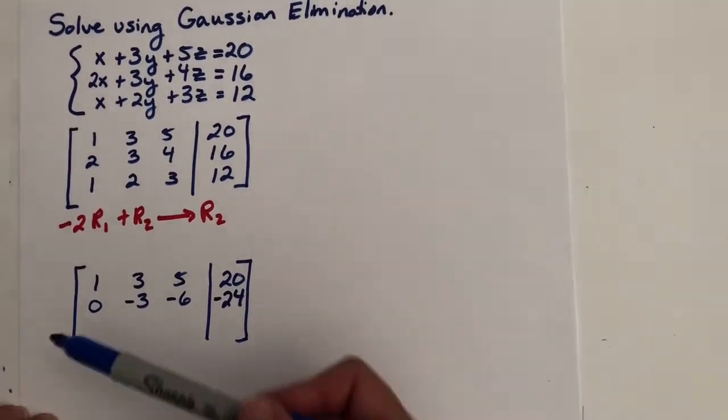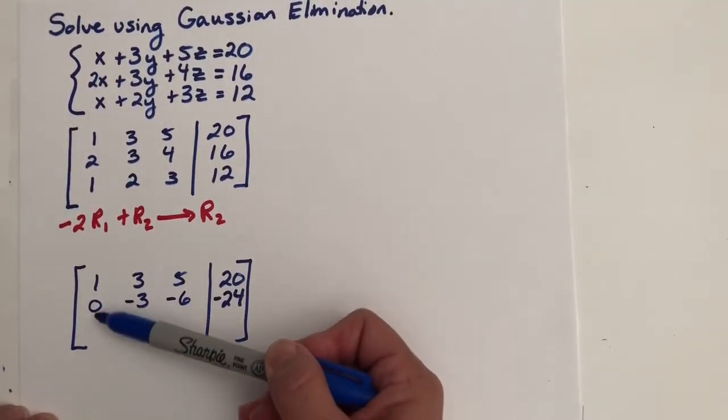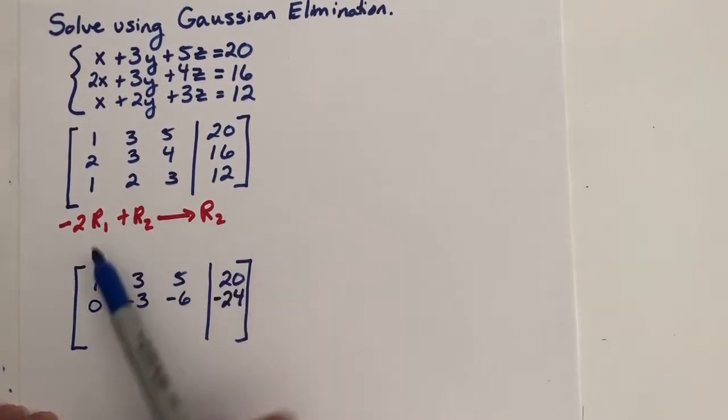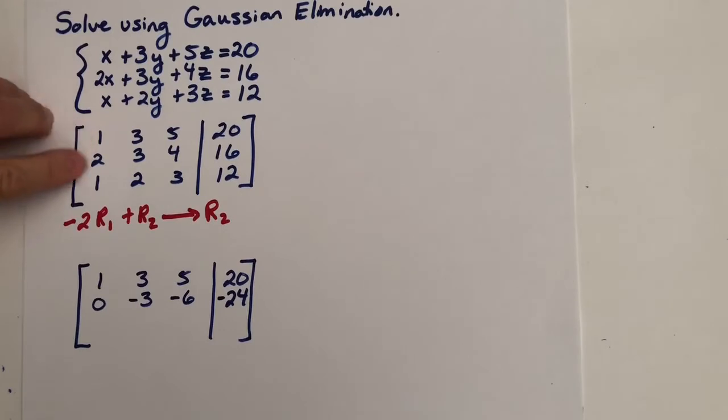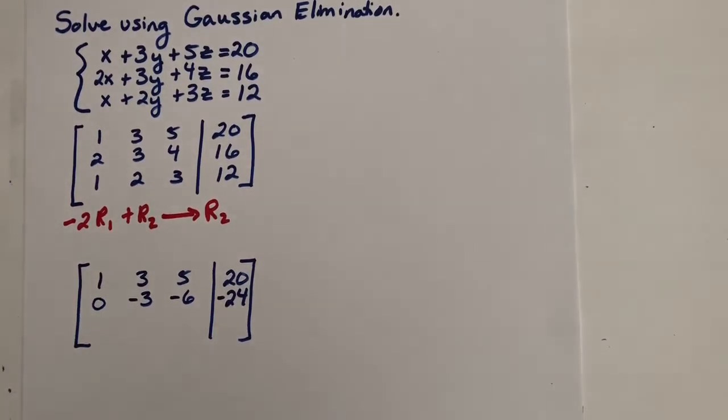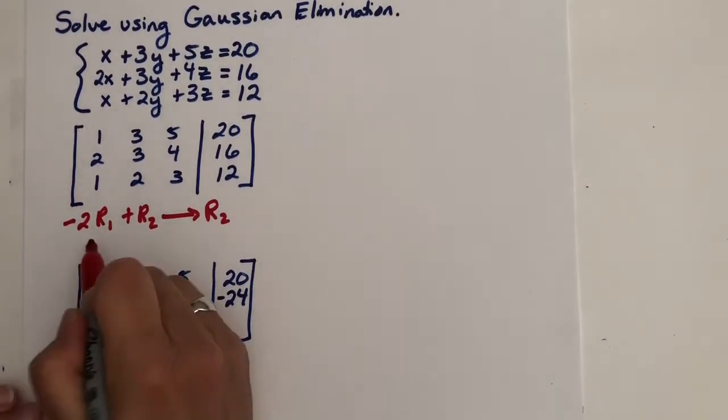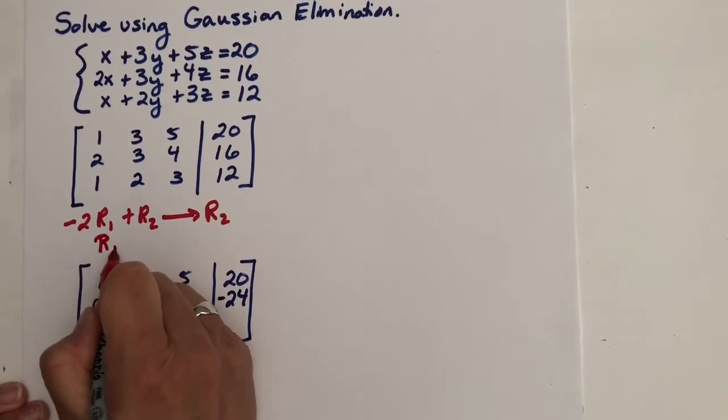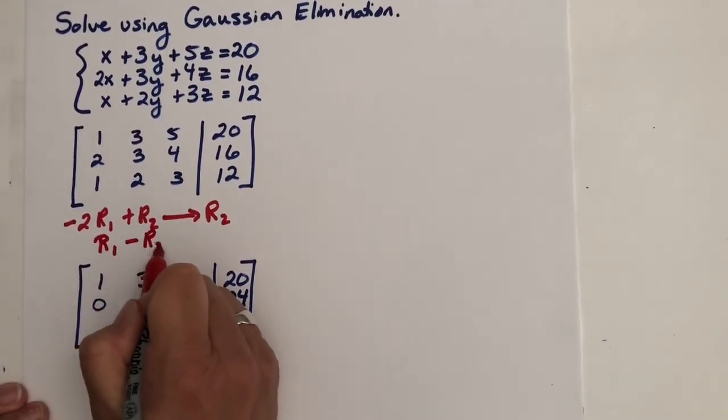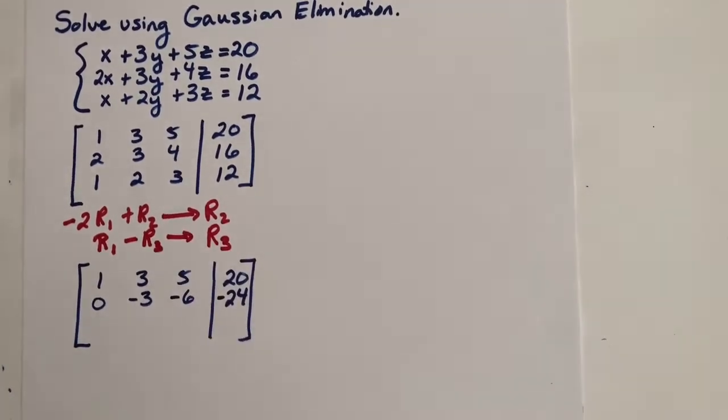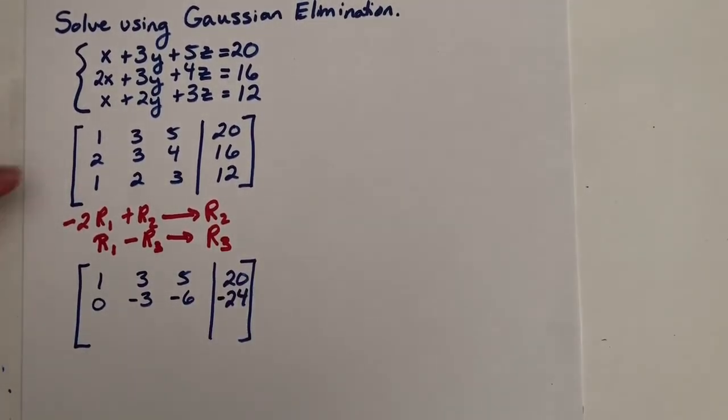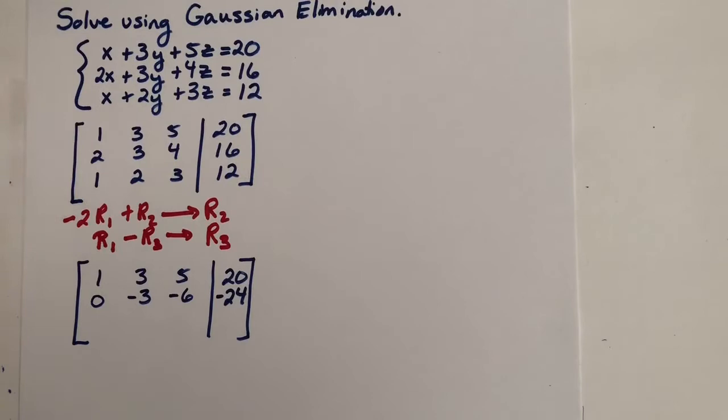But we can create zeros in both of these rows at the same time. So let's do that. I have this row, row 1 and row 3 that I'm looking at. And notice I can just subtract them and put it in row 3. So let's do that. So I'm going to have row 1 minus row 3 and I'm going to put the result in row 3. And certainly you could have multiplied row 1 by negative 1 and adding. It doesn't matter.